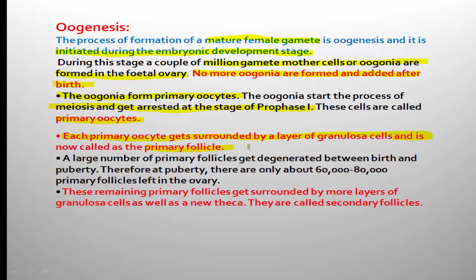A large number of primary follicles are generated between birth and puberty. Before birth of the female child, the oogonia are completely produced — millions of oogonia are produced within the fetal ovary. After birth, these oogonia or primary follicles undergo maturity to produce the egg. Maximum primary follicles are generated from the period of birth to attaining sexual maturity, that is puberty.